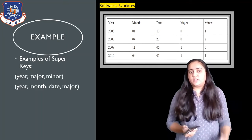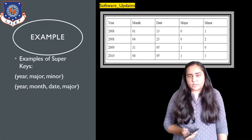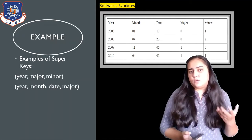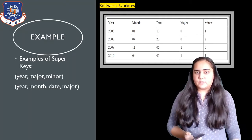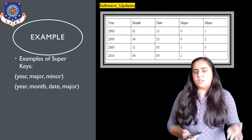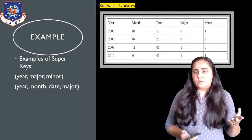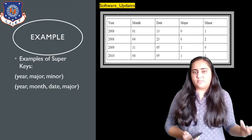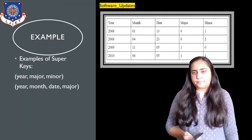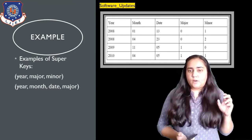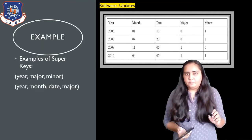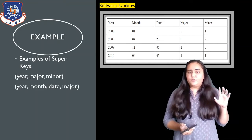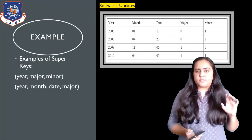Major and minor together can also be a super key because the combinations — 0,1 / 0,2 / 1,0 / 1,1 — are all unique and not repeating. So whenever you take columns together and the combination is unique, you can say they are forming a super key.